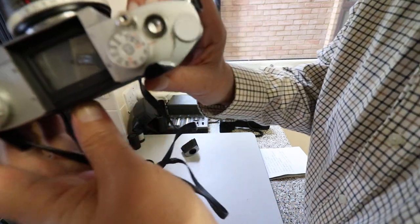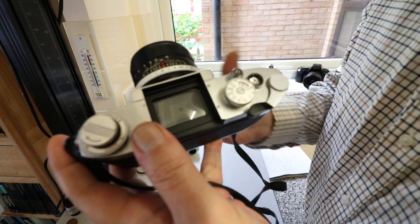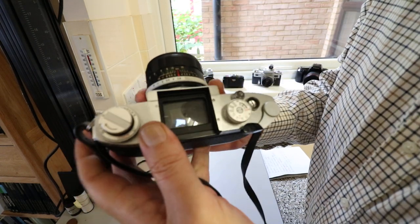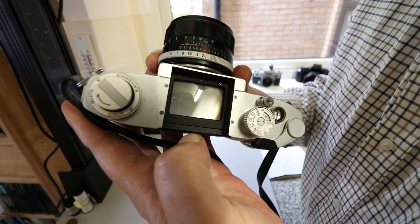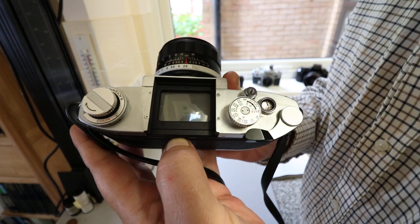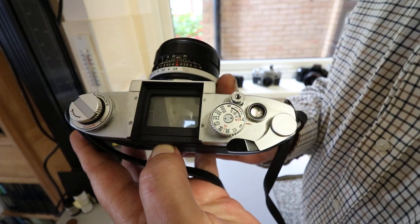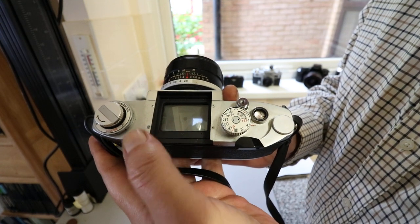On this camera, hopefully you can see the match needle system. There's a needle between the plus and minus, and that is match needle metering. I don't know whether you can see that, there's probably too much reflection and glare, but that's all you get is a little needle going up and down.